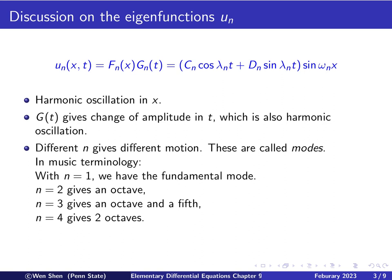In connection with the vibrating string and music theory, there are useful terminologies. When n equals 1, we have the fundamental note. When n equals 2, the tone is an octave higher. When n equals 3, it is an octave and a fifth higher. When n equals 4, it is two octaves higher. The fifth is called a perfect fifth because their periods coincide after certain repeats, so the two sounds sound harmonious together.